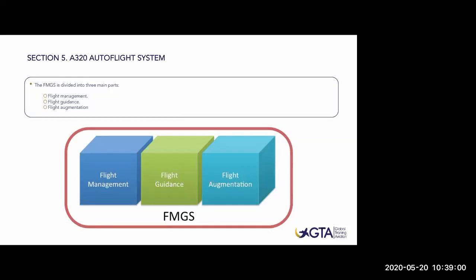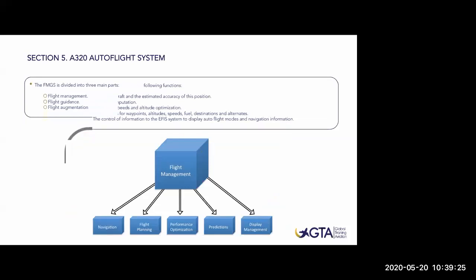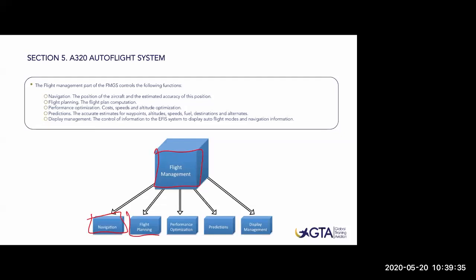We've seen the FMGS is composed of two FMGCs. But those two FMGCs have different functions. We can summarize by saying the FMGS is divided into three main parts: flight management, flight guidance, and flight augmentation. Flight management covers navigation, the route, flight planning, fuel, alternate fuel, contingency fuel, and performance optimization - optimum cruise level, optimum speed, economic climb, economic descent. Also predictions: estimated time of arrival and predicted fuel on arrival or minimum fuel for diversion.